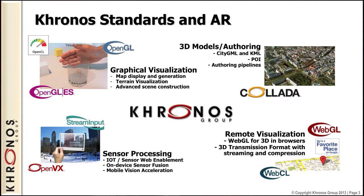We're probably best known for our graphics APIs: OpenGL and OpenGL ES, our 3D graphics APIs. Increasingly, we have OpenCL being deployed on desktop machines, and we're seeing the first isolated pockets of OpenCL being demonstrated on mobile devices. OpenCL is a parallel computation framework. One standard that's not an API is Collada — it's a 3D asset file format intended to be an authoring interchange format, and we're doing some work related to Collada.